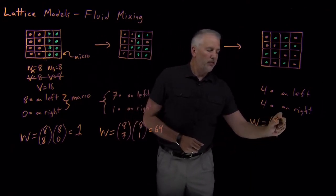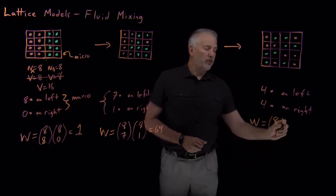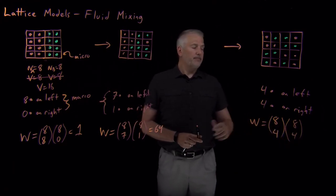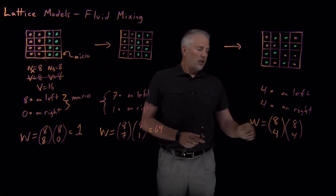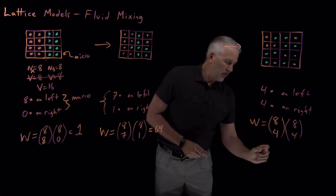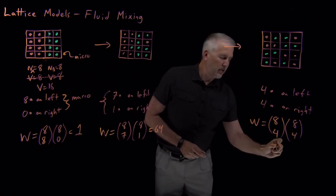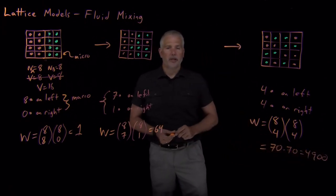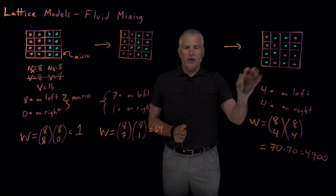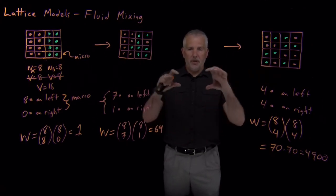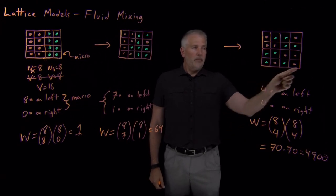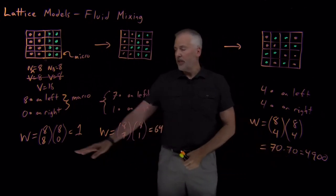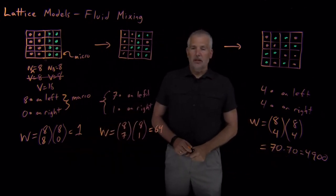Then the multiplicity will be how do I choose which four of eight spots to occupy with orange molecules on the left and how do I choose which four of eight spots to occupy with orange molecules on the right. Eight choose four is 70. So 70 times 70 is 4,900 is the numerical answer we get. So even for this small system of only eight molecules in each beaker that I've mixed together, it turns out that the mixed system, where they're fully mixed, half and half, that is almost 5,000 times more likely than having the system remain completely unmixed.